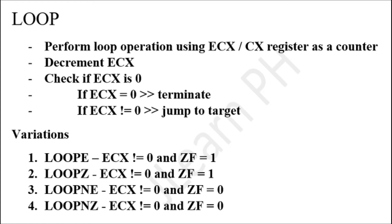There are four variations of the loop instruction: LOOPE, LOOPZ, LOOPNE, and LOOPNZ. LOOPE and LOOPZ are the same and are triggered when ECX is not equal to zero and the zero flag ZF is equal to one.